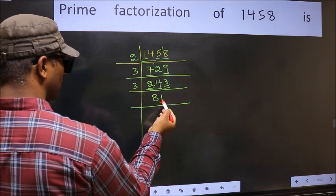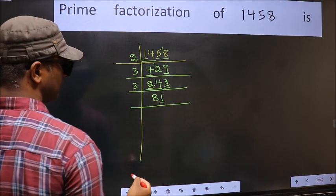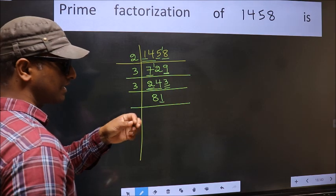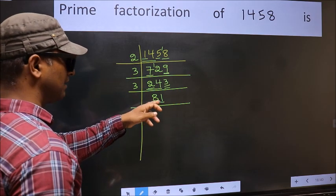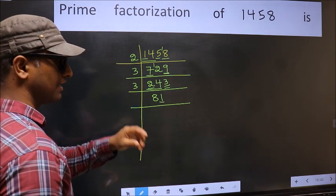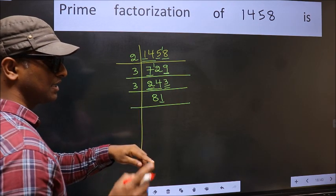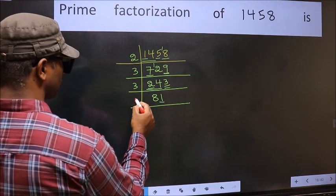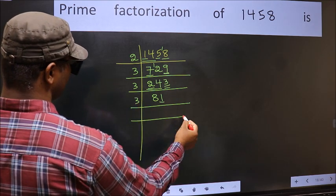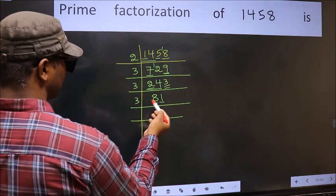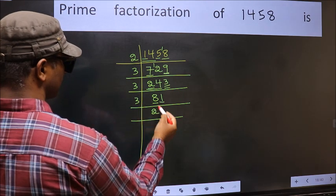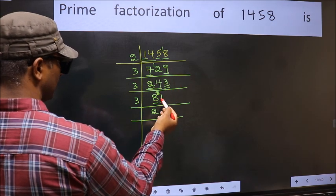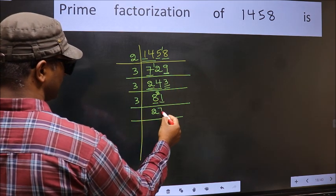Now last digit 1 is not even so not divisible by 2. To check divisibility by 3, we add the digits: 8 plus 1 is 9. 9 is divisible by 3, so this number is also divisible by 3. Take 3 here. First number 8 — a number close to 8 in the 3 table is 3 twos 6. 8 minus 6 is 2, 2 carried forward giving 21. When do we get 21 in the 3 table? 3 sevens 21.